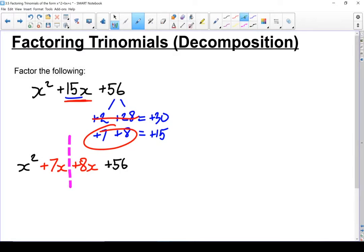I can factor an x out of both x squared and plus 7x. Let's do that. When I factor out an x, I'm left with a single x and a plus 7.